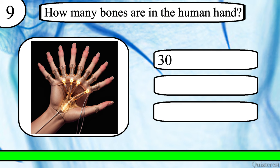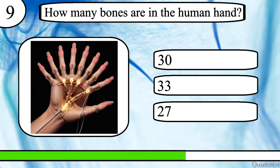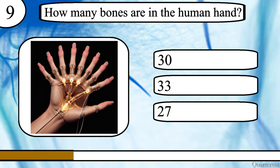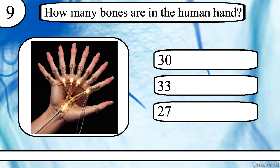Question 8. How many bones are in the human hand? 30, 33 or 27? The correct answer is 27.